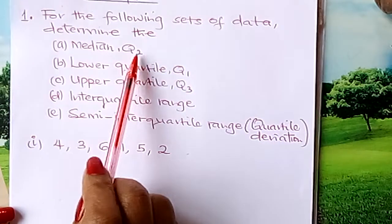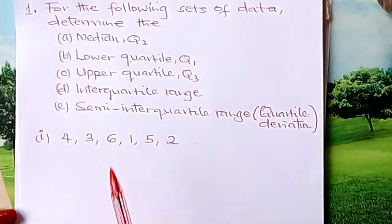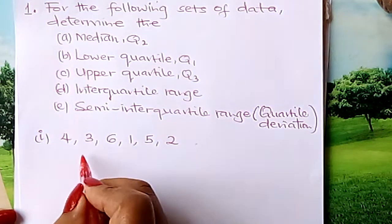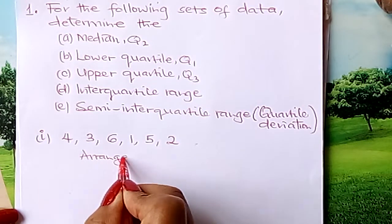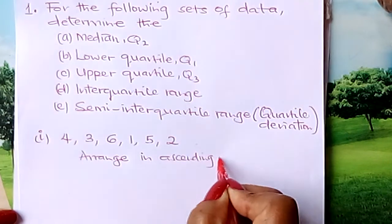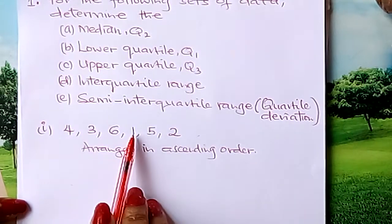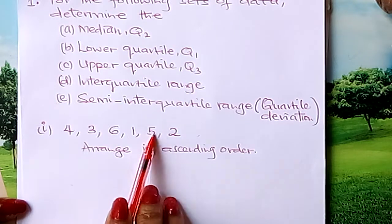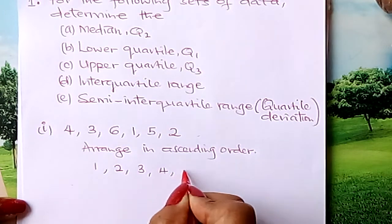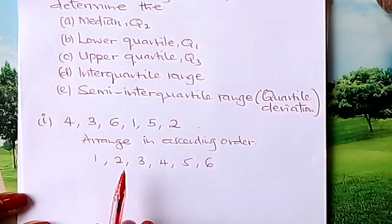We start with the median. Whenever you are told to find a quartile, the first step is to arrange the numbers in ascending order. So we arrange our numbers: 1, 2, 3, 4, 5, 6. Those are our numbers arranged in ascending order.